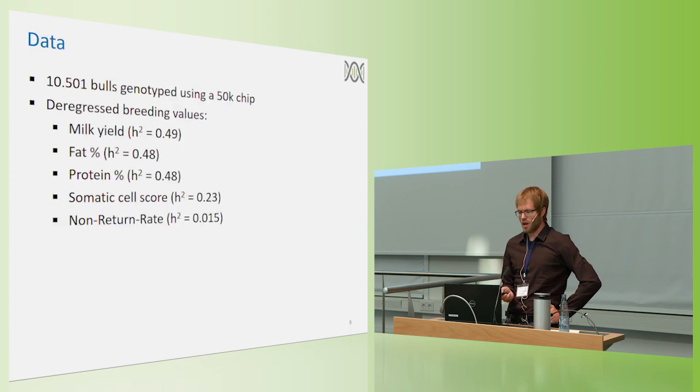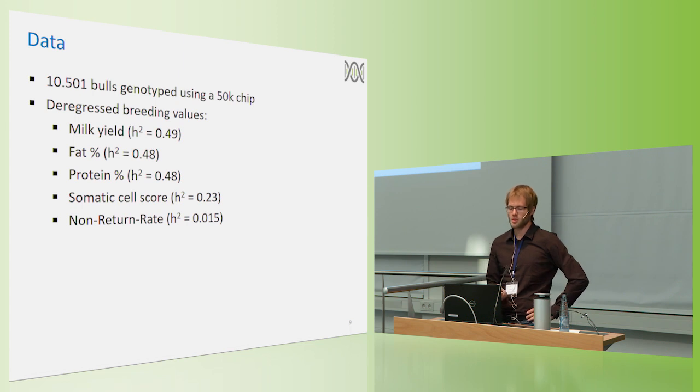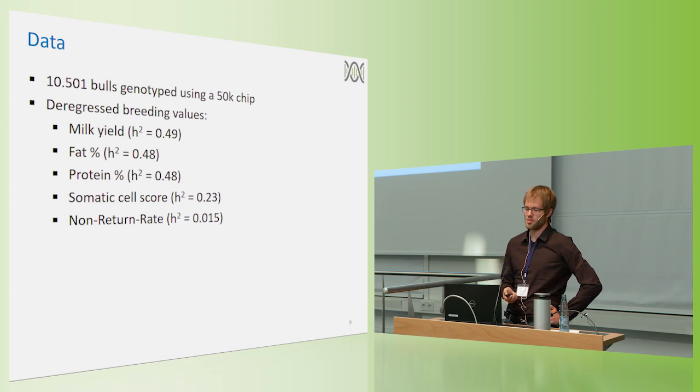Now I'm coming to our application. For this, we used 10,000 bulls which were genotyped on a 50K chip. The data was provided by VIT. And for this, we had deregressed breeding values for a couple of traits, ranging from higher heritability like milk yield, fat and protein, up to lower heritabilities like somatic cell score and non-return rate.